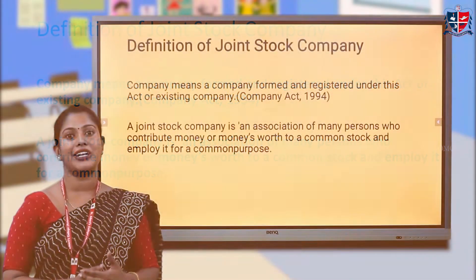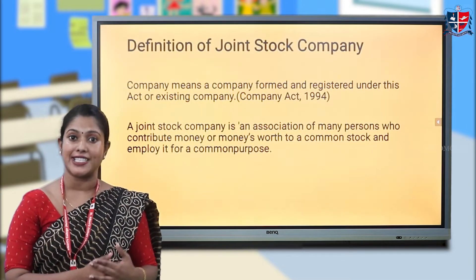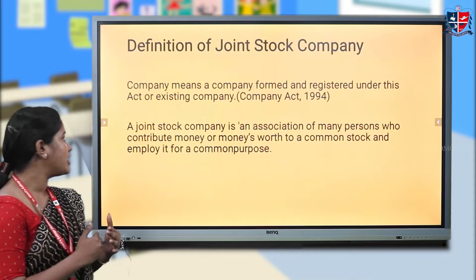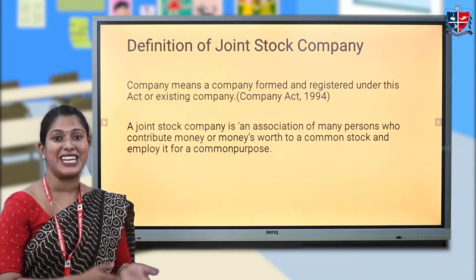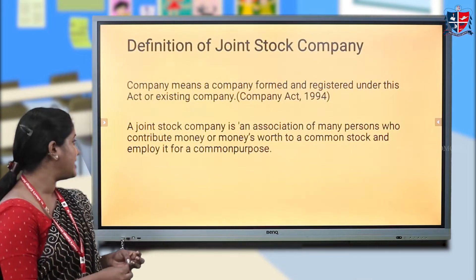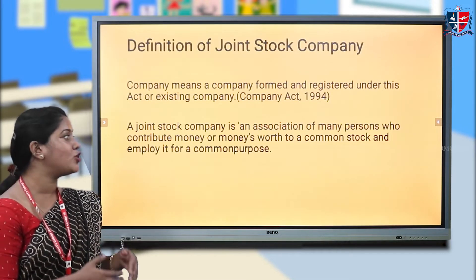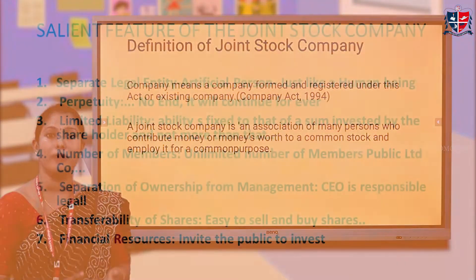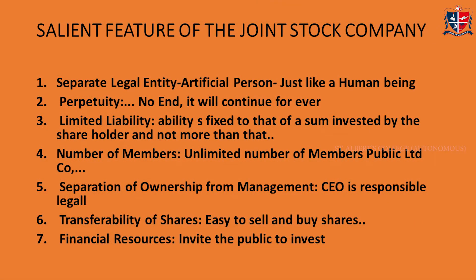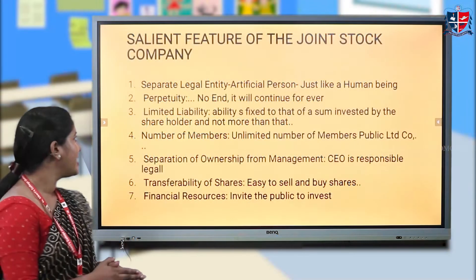A joint stock company is a company which is formed and registered under the Companies Act or any existing Companies Act. A joint stock company is an association of many persons who invest or contribute money to a common stock and employ it for a common purpose.